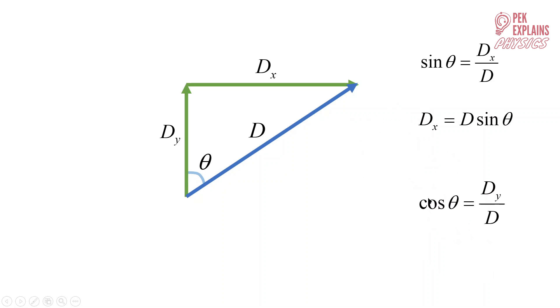And cosine theta gives us the Y component in this case, since the Y component is adjacent to the angle theta.